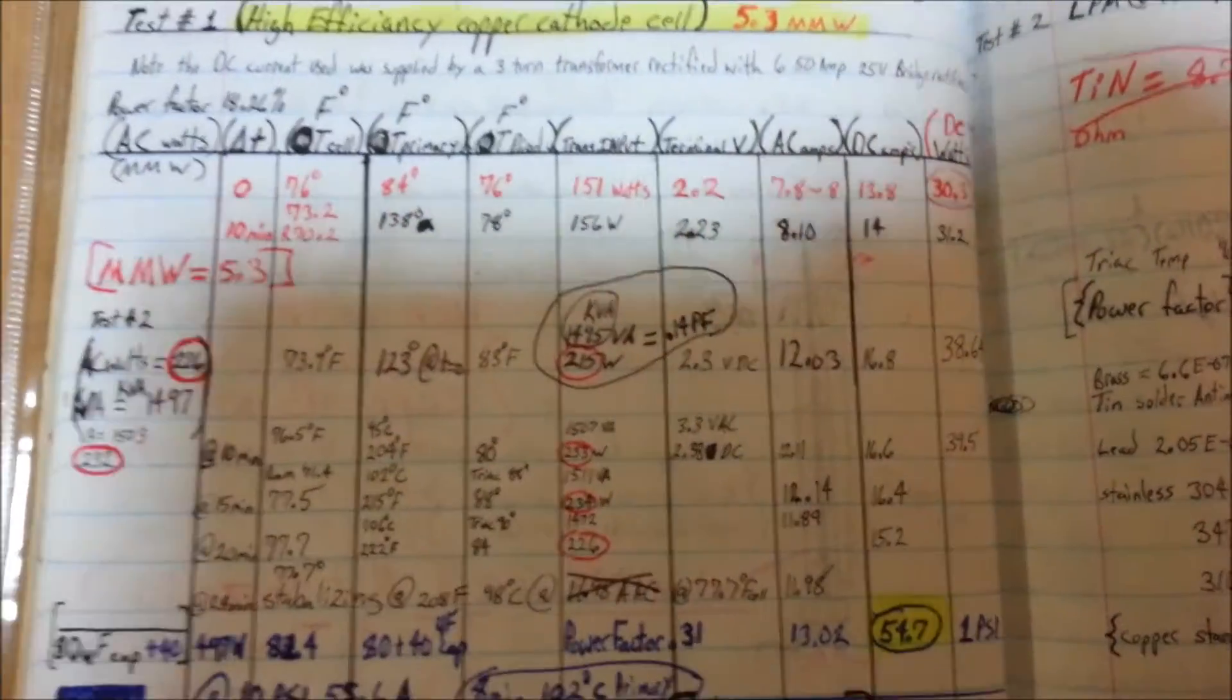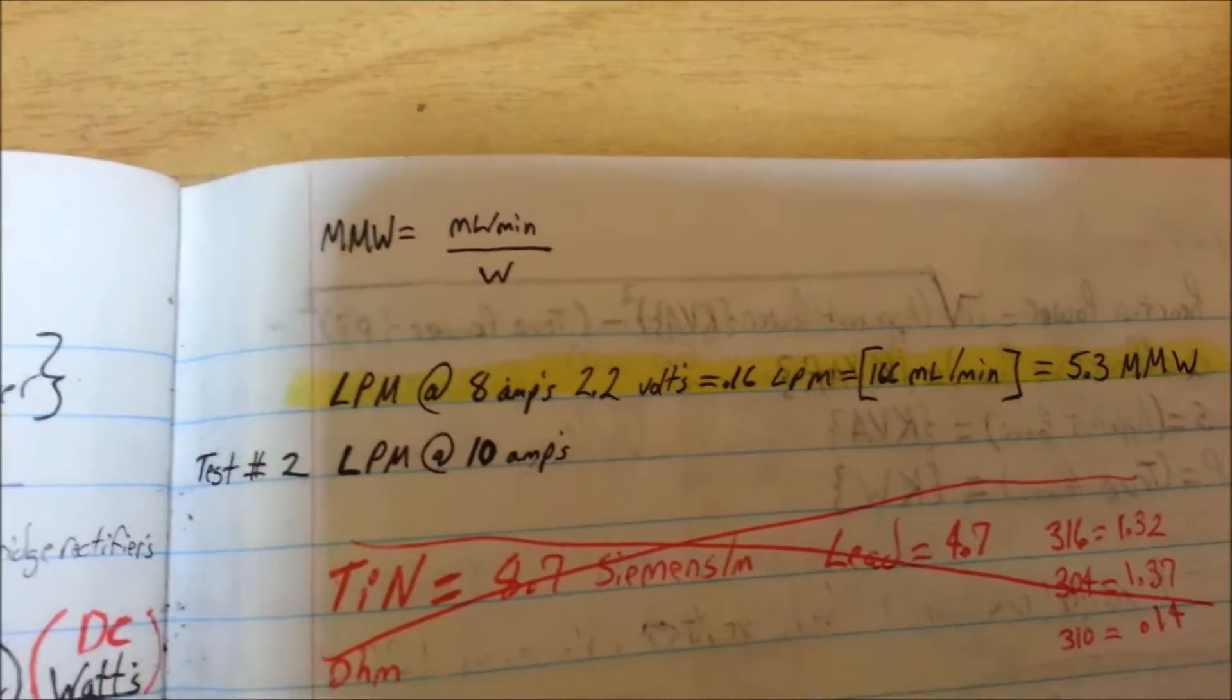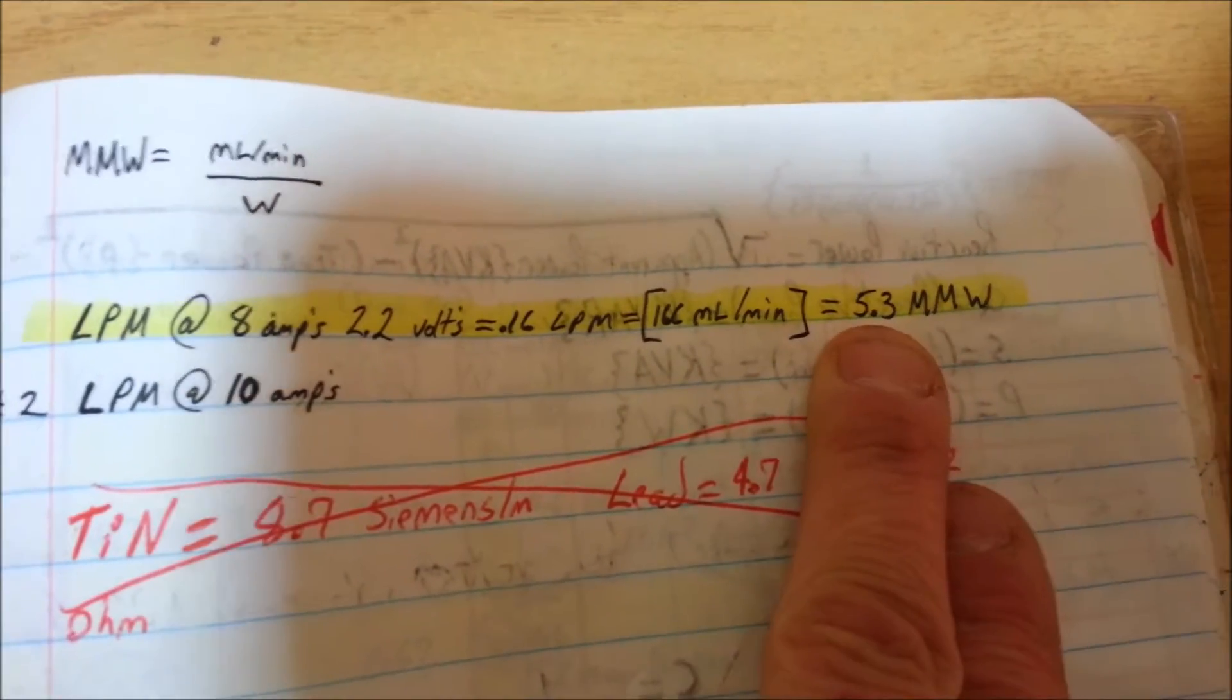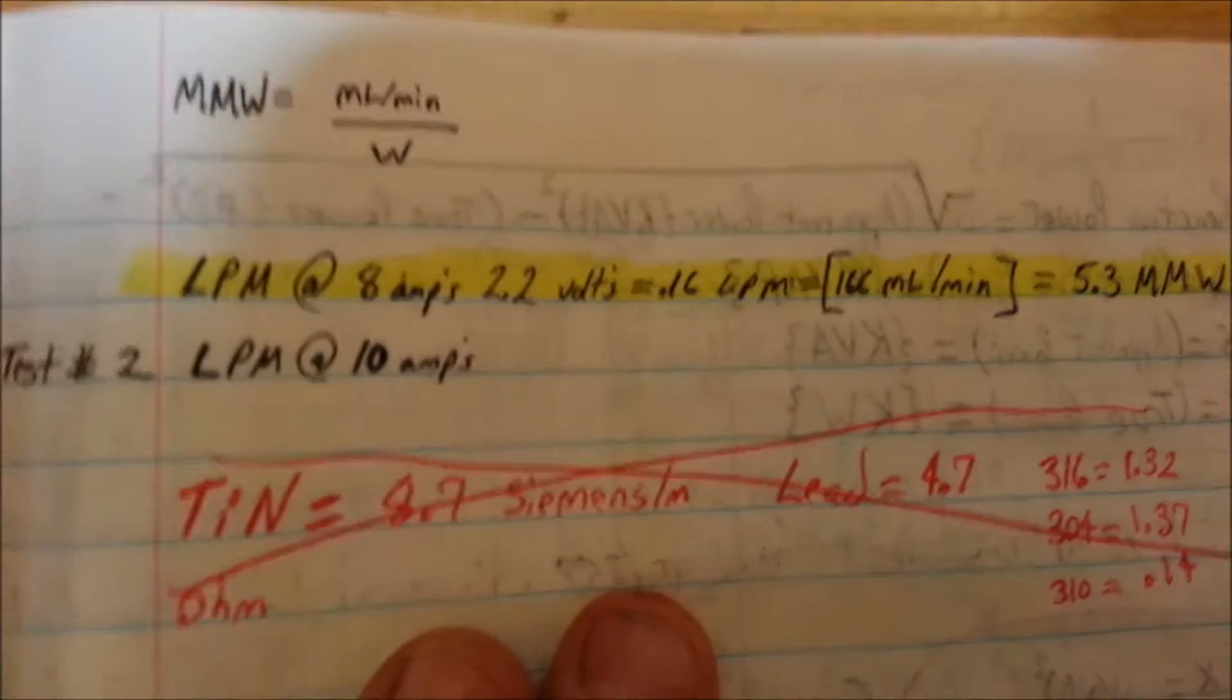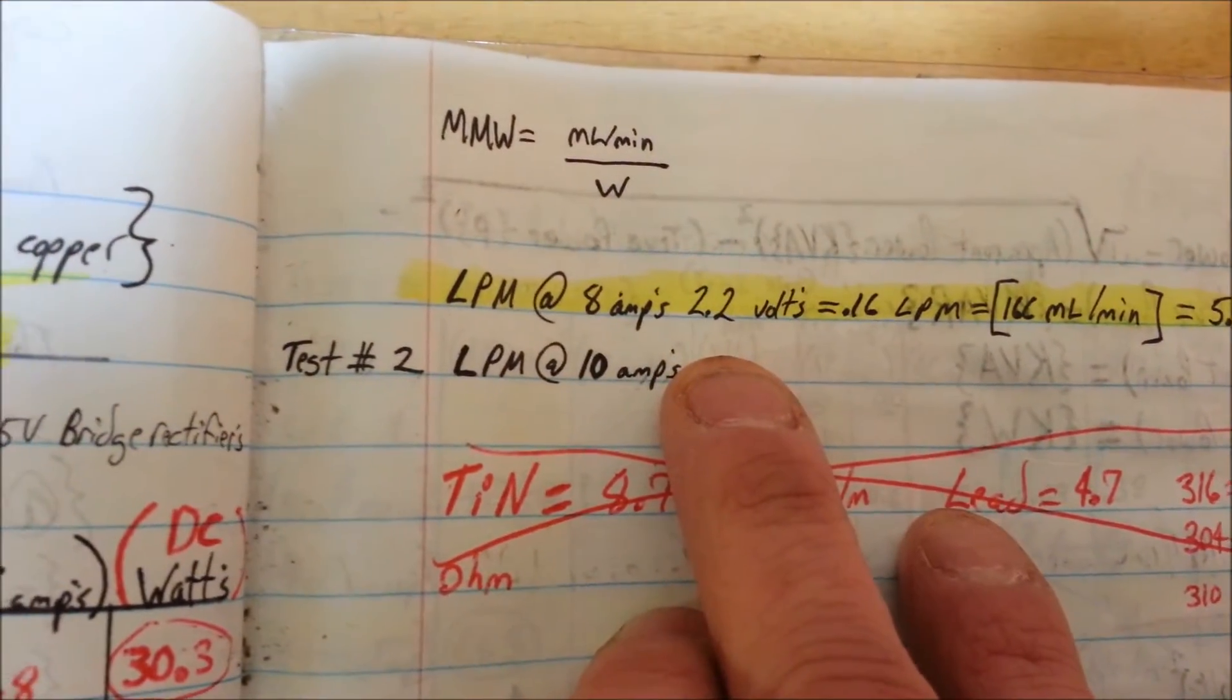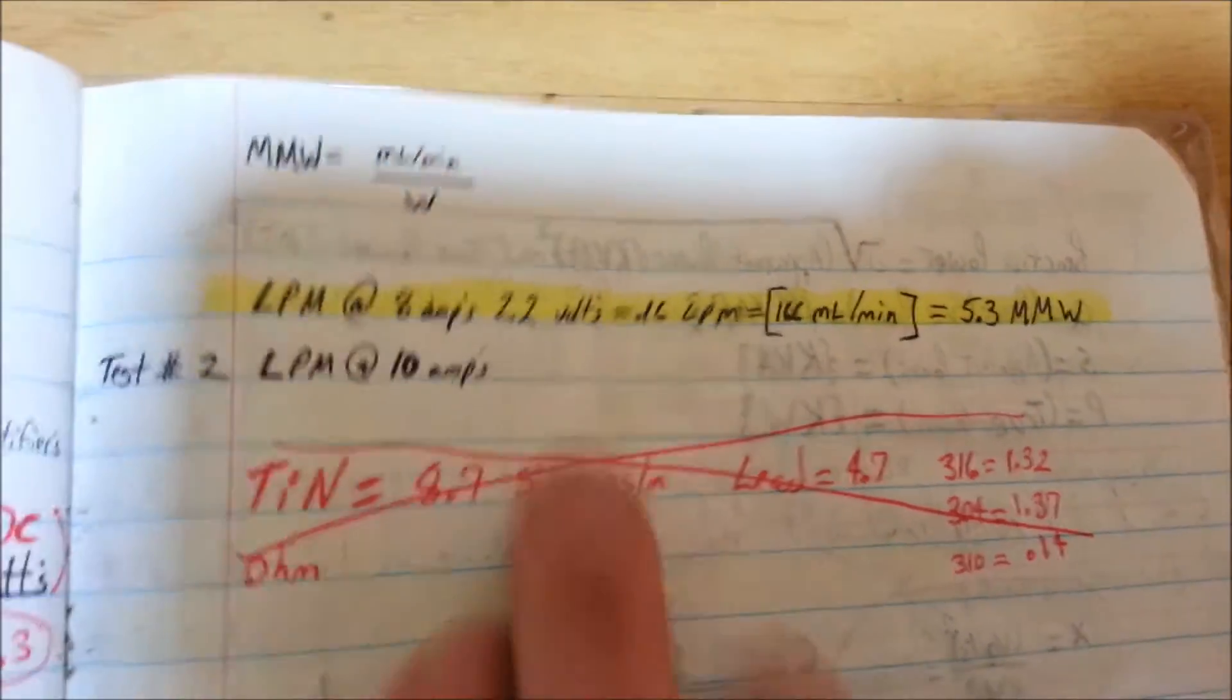Here is some of the data that I took. This line here shows that I got an MMW of 5.3 out of this cell, which is phenomenal. It's better than anything I've ever built. I wasn't putting off a lot of gas, but hey, I was at like 8 amps, 2.2 volts. I mean, that's not a whole lot.